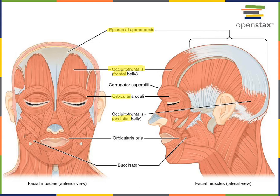Next we'll look at orbicularis oculi. Orbicularis refers to the circular fascicle arrangement of this muscle, and oculi refers to its location surrounding the ocular region. The action of orbicularis oculi is to close the eyelids, also known as palpebrae, in order to protect the anterior surface of the eye.